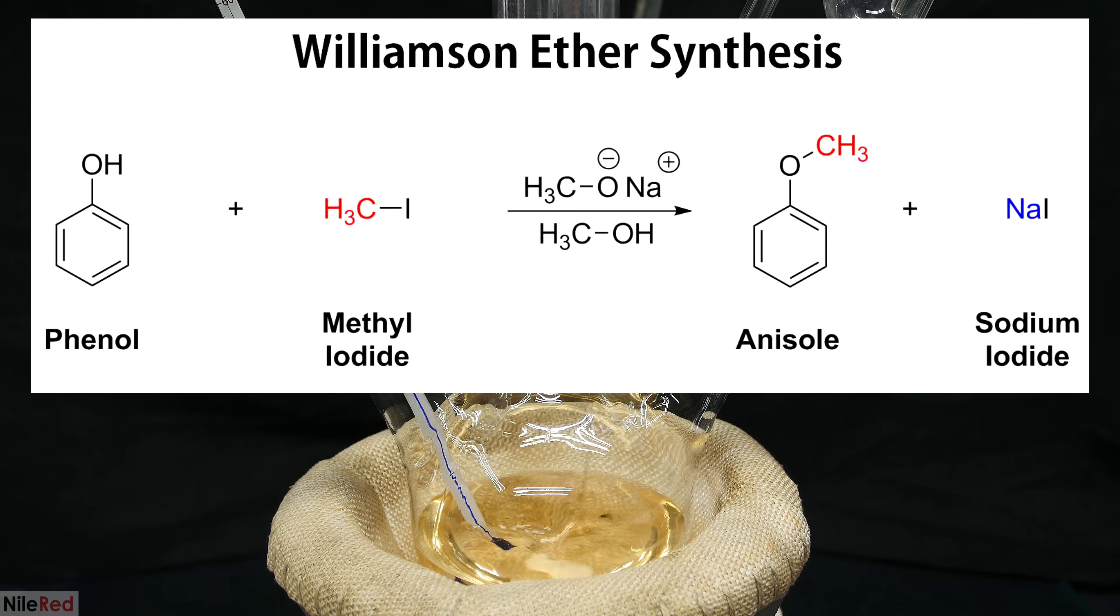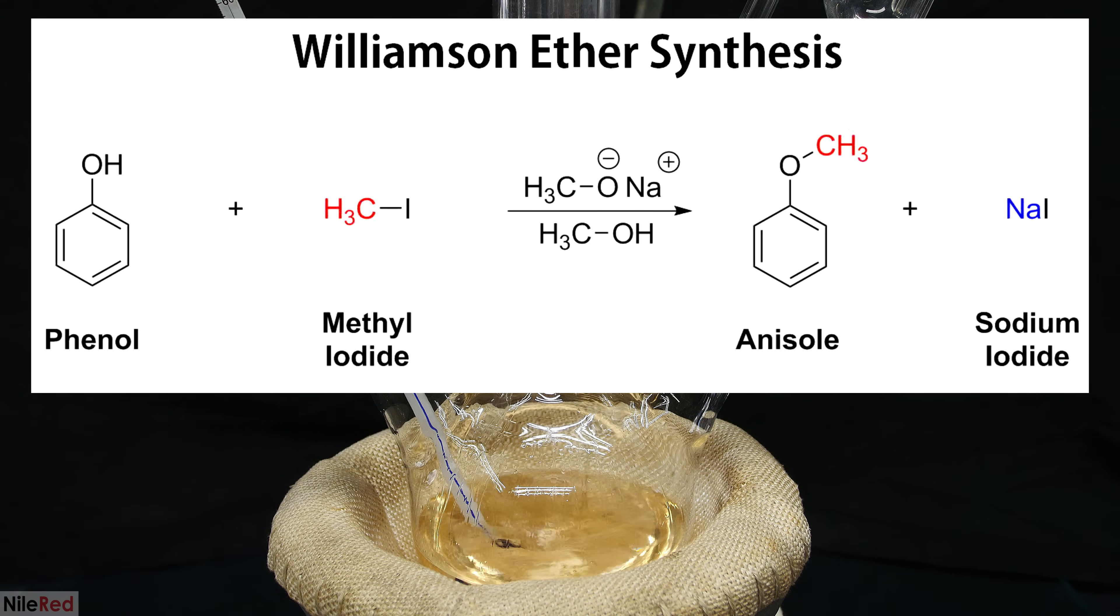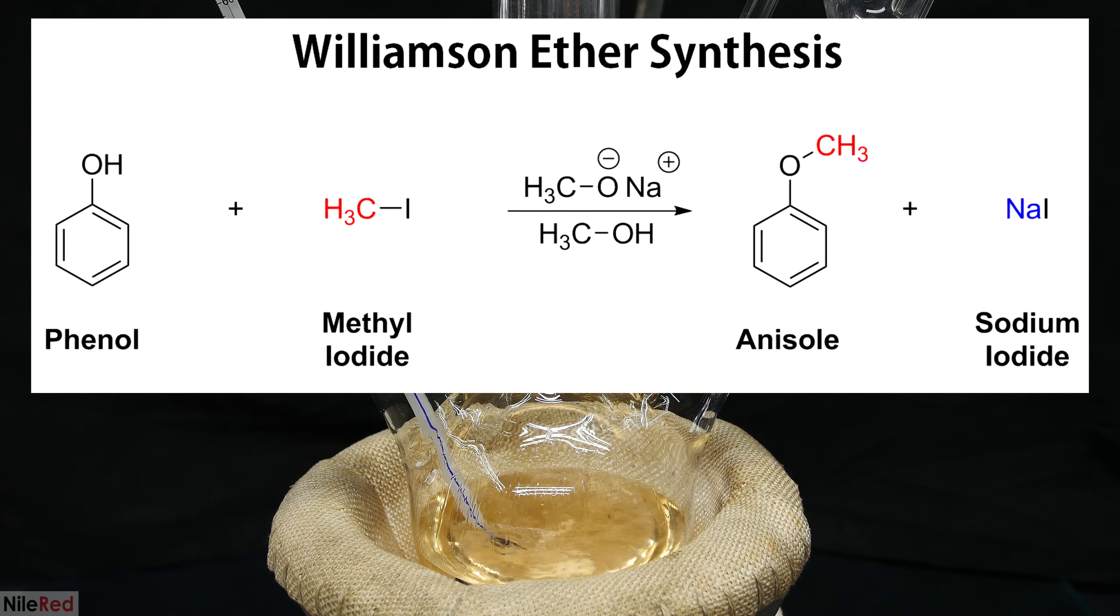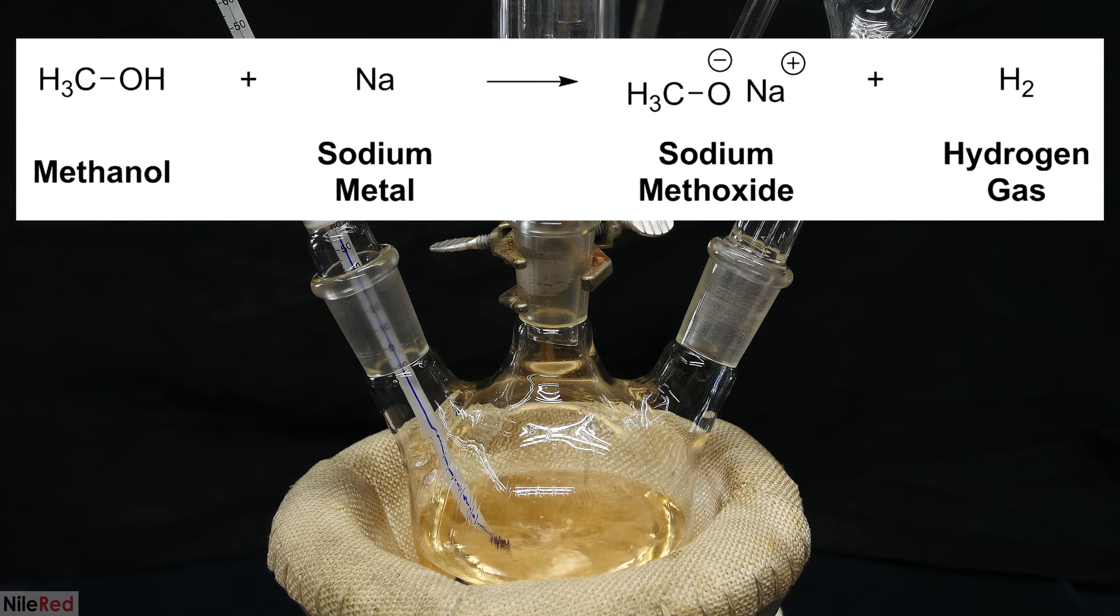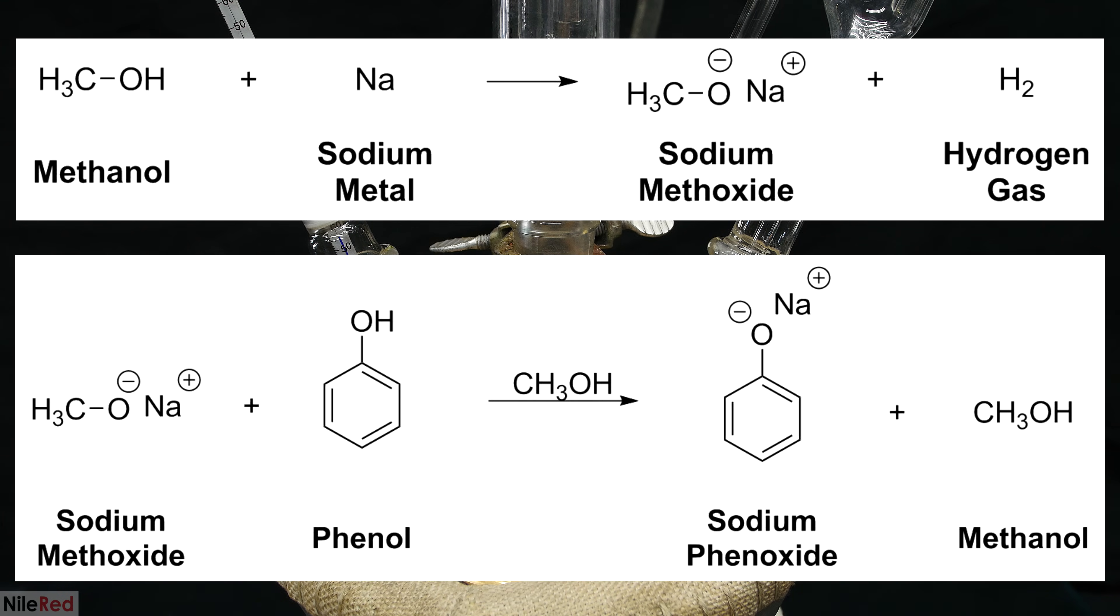As I mentioned earlier, the reaction that we're carrying out is called the Williamson ether synthesis. We're reacting phenol with methyl iodide in the presence of sodium methoxide and methanol to form anisole and sodium iodide. We started out by reacting sodium with methanol to produce sodium methoxide. Sodium methoxide is a strong base, and it deprotonates the phenol when it's added to form sodium phenoxide and methanol. The sodium phenoxide is the active species that will react with the methyl iodide once we add it.